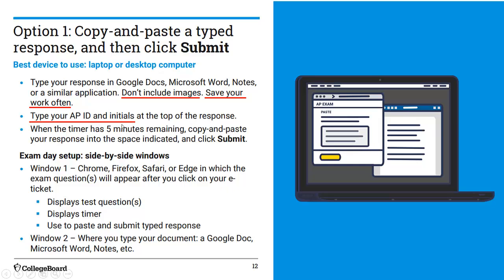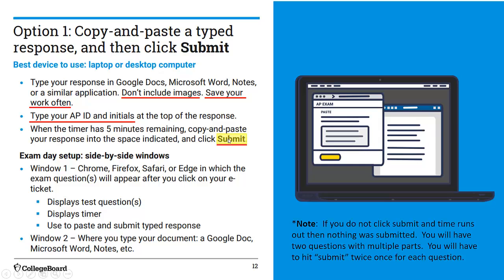Type your AP ID and initials at the top of the page, copy and paste, and hit submit. You have to hit submit within that five-minute period, and you'll do it once for each question — so twice total. If you hit submit within that five minutes, it may take a while to upload to the College Board, especially since this is the first actual AP test. Don't worry — the second question will pop up when it's supposed to so you get full time on it. Don't hit submit repeatedly, and do not refresh the browser or it'll kick you out. It'll keep uploading in the background.